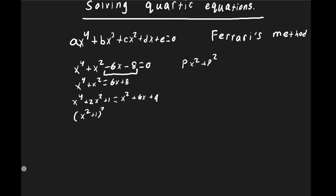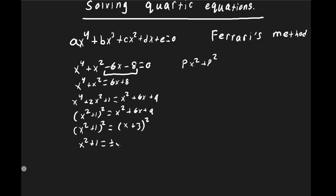We can now express the left side as a perfect square: (x² + 1)² = x² + 6x + 9. The right side is also a perfect square, so we write (x² + 1)² = (x + 3)². Taking the square root of both sides gives x² + 1 = ±(x + 3).